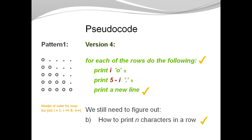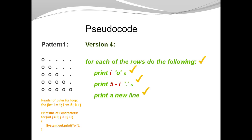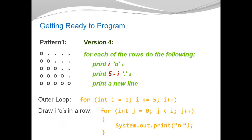So at this point, we can check off task B. We figured out how to print n characters in a row. We have for each of the steps in our pseudocode a plan how to translate that to Java. And now we're getting ready to program.